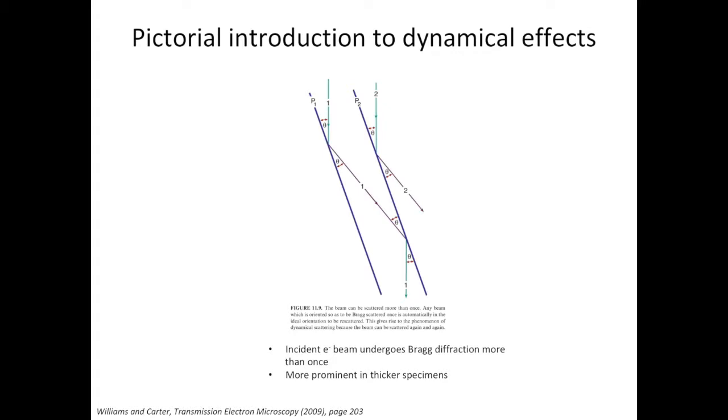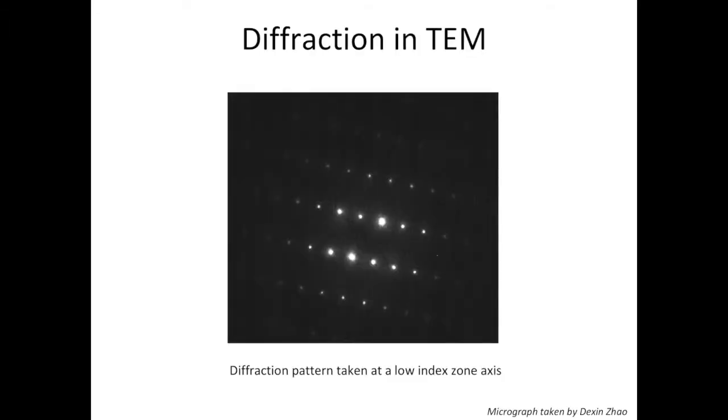Let's start by looking at a diffraction pattern which is not two-beam. This diffraction pattern was acquired when the magnesium crystal was tilted to a low index zone axis. When the crystal is tilted to a low index zone axis, multiple planes can undergo Bragg's diffraction. So this is a multiple diffraction condition.